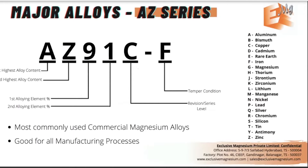When people talk about magnesium, they're not really talking about pure magnesium. Magnesium is alloyed into different commercial grade alloys. When you talk about magnesium, you're usually talking about those commercial grade alloys, and you'll hear terminologies like AZ91, AM60, or ZE41.